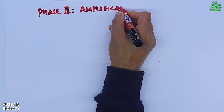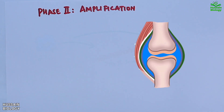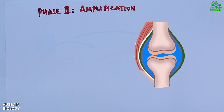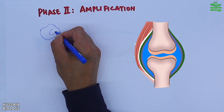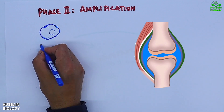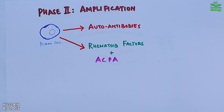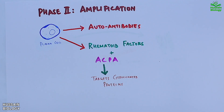Moving to the second phase — the amplification phase — after initiation, antibodies and ACPA migrate toward the synovial joint. Plasma cells secrete autoantibodies, rheumatoid factors (IgM), and IgG antibody along with ACPA. These form an immune complex that drives complement binding and activation of the complement system, ultimately leading to intense inflammation in the joints.